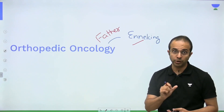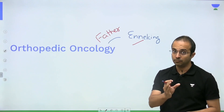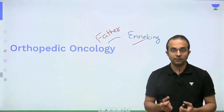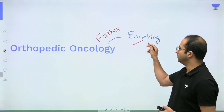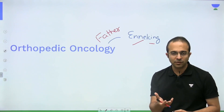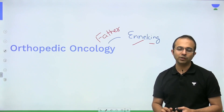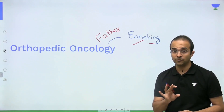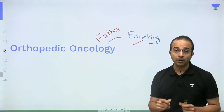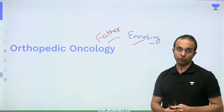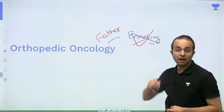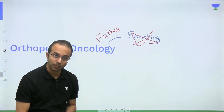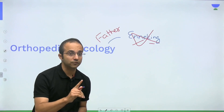I don't want that to happen to you. By chance this question gets repeated, so I'm telling you: the father of orthopedic oncology is Enneking. I was inquisitive, so when I made that mistake I went back home to check his contribution. I got to know that he had given a system of classification for bone tumors — that's why he was called the father of orthopedic oncology. I also found that the WHO has given a classification system for bone tumors, so I decided I would use the WHO system when teaching.